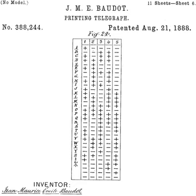The Baudot code, invented by Émile Baudot, is a character set predating EBCDIC and ASCII. It was the predecessor to the International Telegraph Alphabet No. 2, the teleprinter code in use until the advent of ASCII. Each character in the alphabet is represented by a series of five bits, sent over a communication channel such as a telegraph wire or a radio signal.